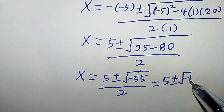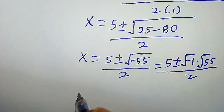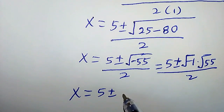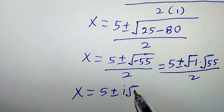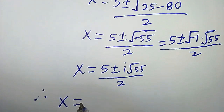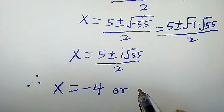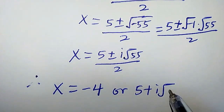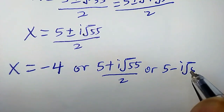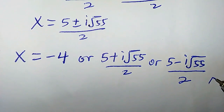This equals 5 plus or minus square root of negative 1 times square root of 55, all over 2. From complex numbers, square root of negative 1 is i, so x equals 5 plus or minus i times square root of 55, all over 2. Therefore the solutions are: x equals negative 4 (the first real solution), or x equals (5 plus i√55) / 2, or x equals (5 minus i√55) / 2.